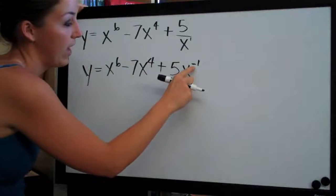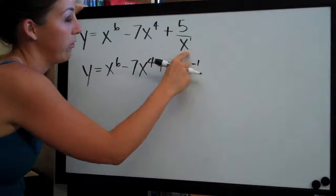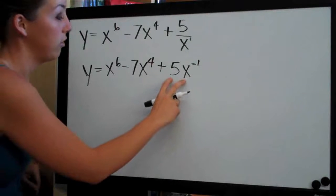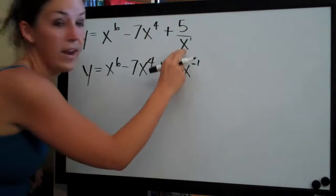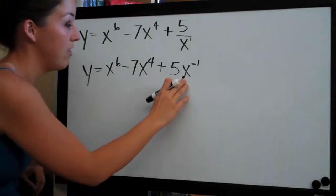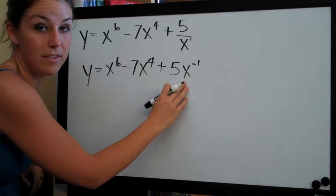And see I just added that negative sign and that allowed us to bring this whole term into the numerator. These terms, 5x to the negative 1 and 5 over x to the 1, are the same thing. So we just converted it and this will be something now that we can easily take the derivative of.